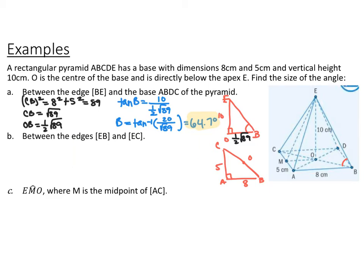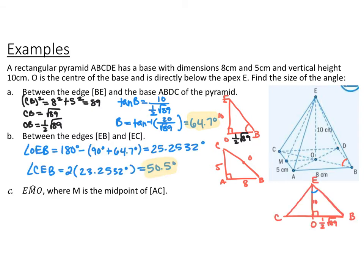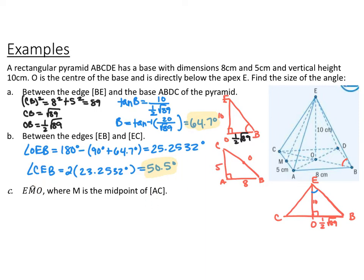Now pause the video and try part B: finding the angle between EB and EC, and angle EMO, where M is the midpoint of side AC. For angle CEB, I noticed it is twice the angle OEB. I found angle OEB by doing 180 minus 90 minus 64.7 degrees, giving 25.3 degrees. So the full angle CEB is twice that, which is 50.5 degrees.